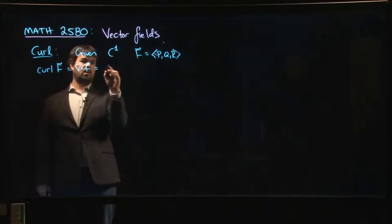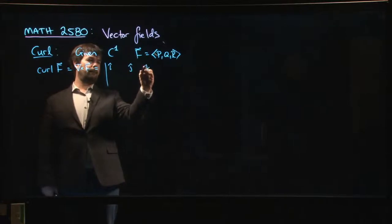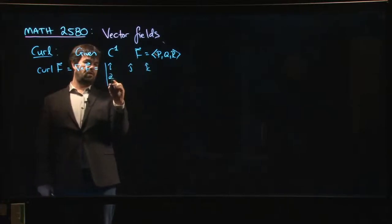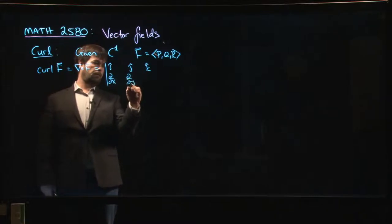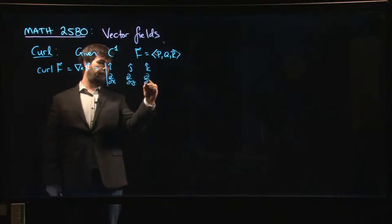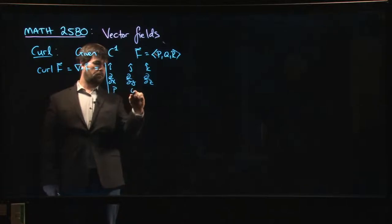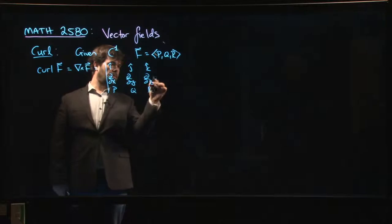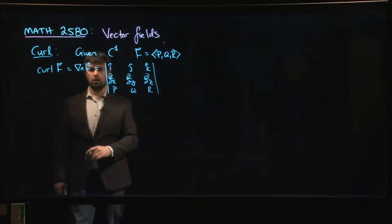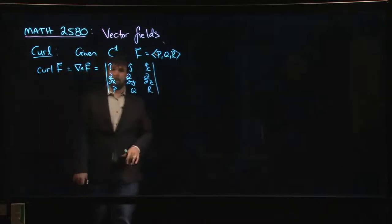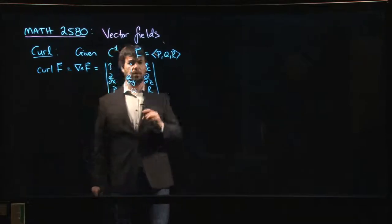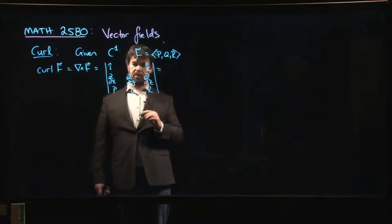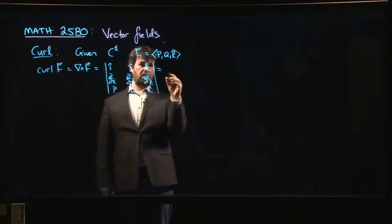So as we said, probably the easiest way to remember it is through this sort of 3x3 determinant trick. All right, so you've put i, j, k across the first row. You put your derivatives across the second row. You put your vector field components across the third, and you multiply everything out.